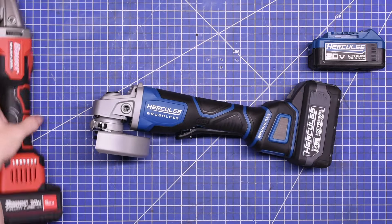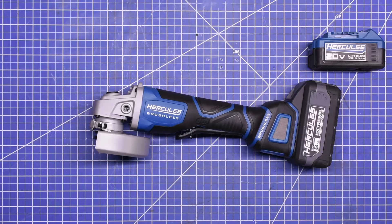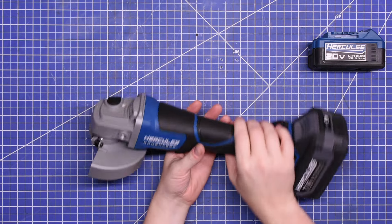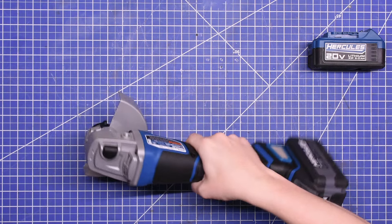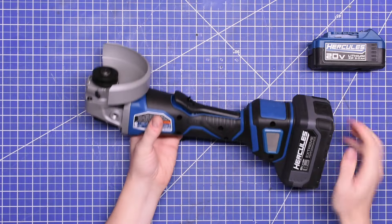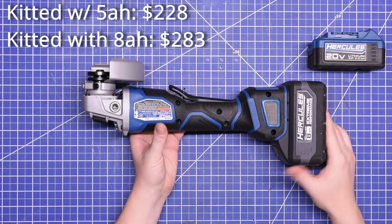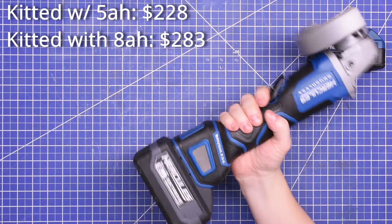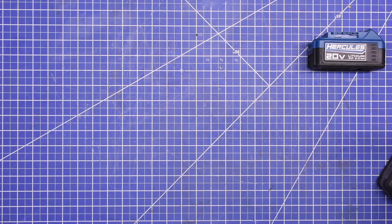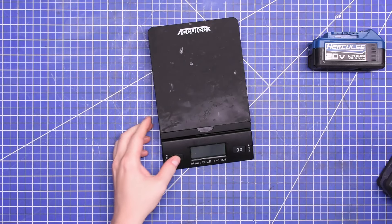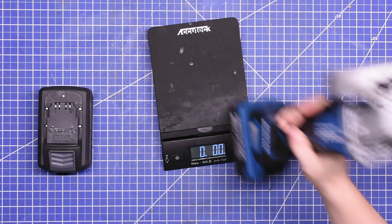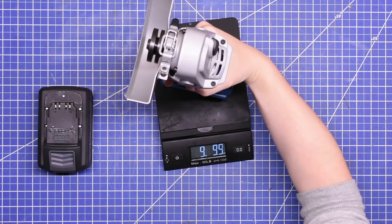We're going to find that out. That does come with it a pricier kit you need to put together though, making a five amp hour kit totals $228 and the eight amp hour $283. This is a paddle switch design, which is what our store had—same price—but I prefer the sliding switch design if I had to choose.